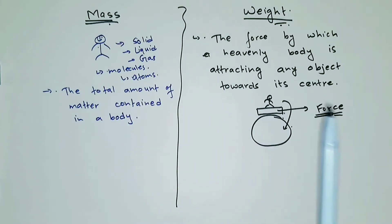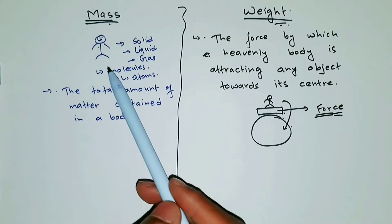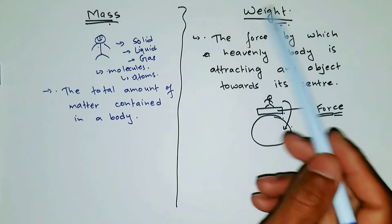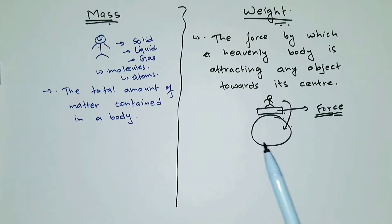So they are completely different things. Mass is about the matter, about the molecules, whereas weight is actually force by which it could be Earth, or any heavenly bodies, attracting you towards its center.